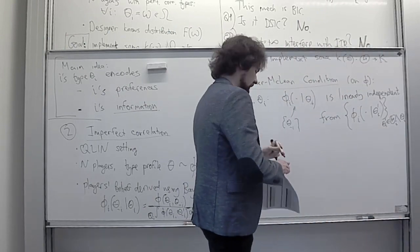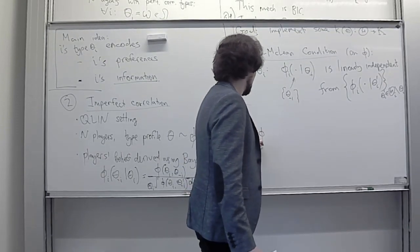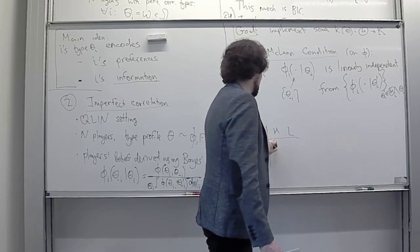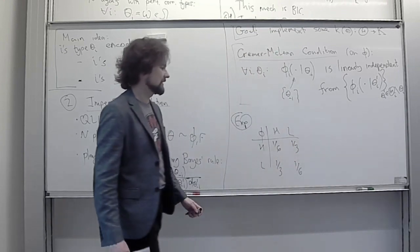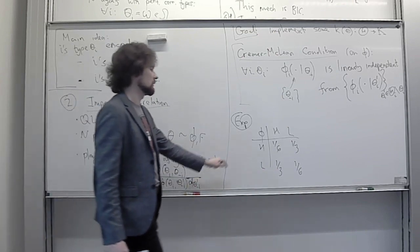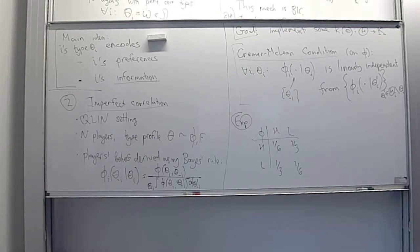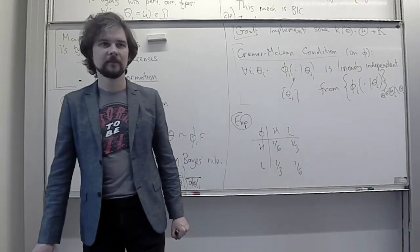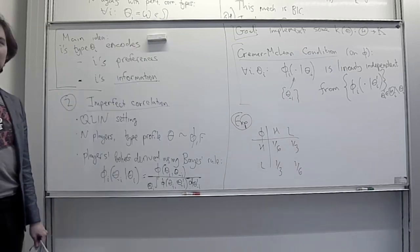Let's take two very simple examples, both with two players. First, a two-by-two example — two types for every player. The distribution is: type profile HH has probability 1/6, HL has probability 1/3, LH has probability 1/3, and LL has probability 1/6. The question is: does this phi satisfy the Cramér-McLean condition? How do you even approach this problem?